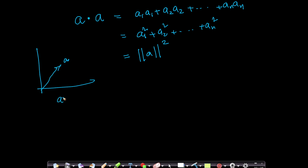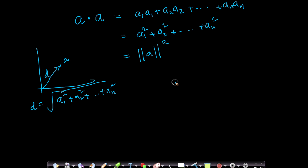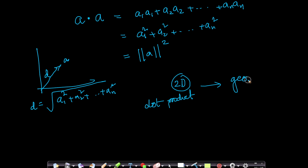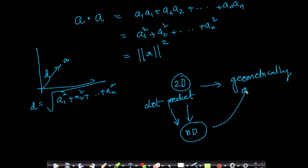The expression a1² + a2² + ... + an² is nothing but the squared distance of vector a from the origin. We know the distance from origin d equals the square root of a1² + a2² + ... + an². So a dot a gives the square of the distance from the origin, in any dimensional space. That's the beauty — dot product generalizes to n dimensions, letting us understand n-dimensional geometry without visualizing it.